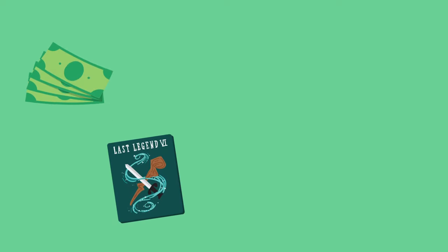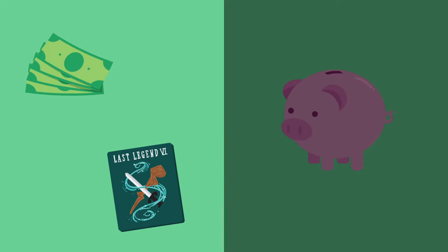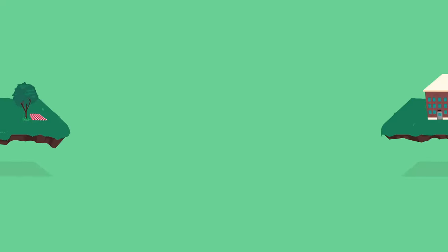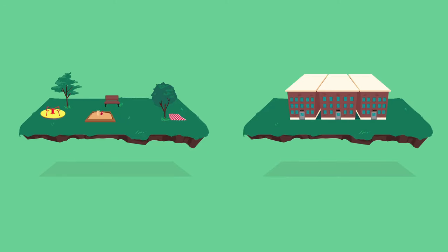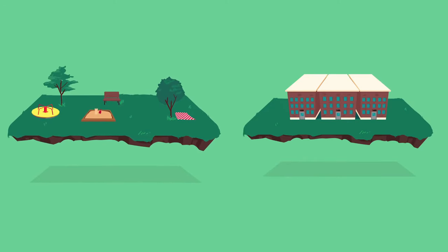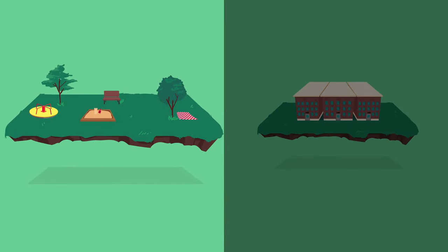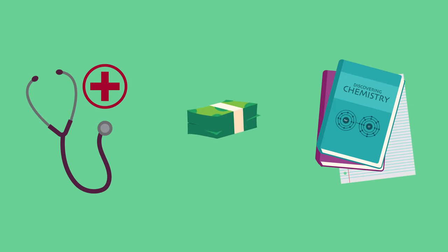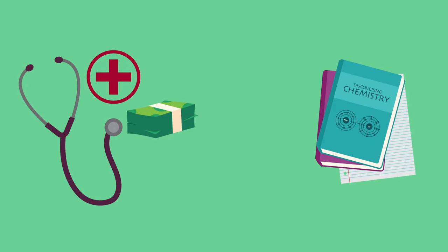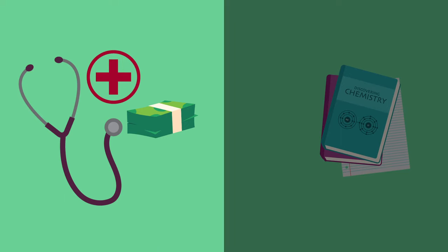The opportunity cost of spending money is the lost opportunity to save the money. For society, the opportunity cost of using land for a park is the housing given up. The opportunity cost of spending tax revenues on health care is the lost opportunity to spend that same money on education.